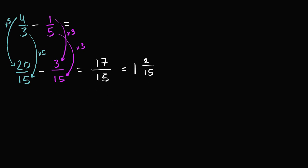Let's do another example. Let's see if we can figure out what 7/10 minus 5/8 is. I encourage you to pause this video and see if you can calculate it yourself. Just like before, we have different denominators, so we need to rewrite them so that they have a common denominator — that way we can subtract.